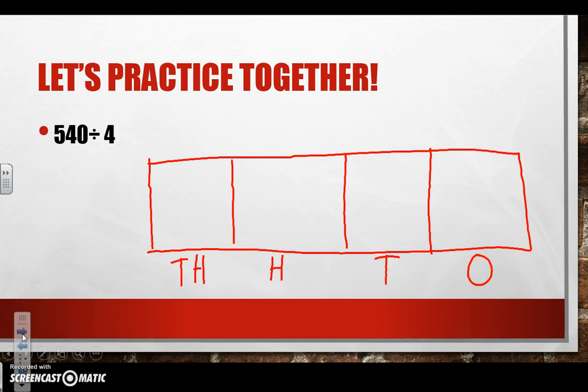We are going to look at our dividend and it's 540 so we're not going to use the thousands. So let's cross it out so we don't get confused. Let's look at our divisor which is 4 and write it on the very left side like we know that we should. And let's go ahead and put our dividend in the hundreds place where it belongs. 540, that's where we're starting.